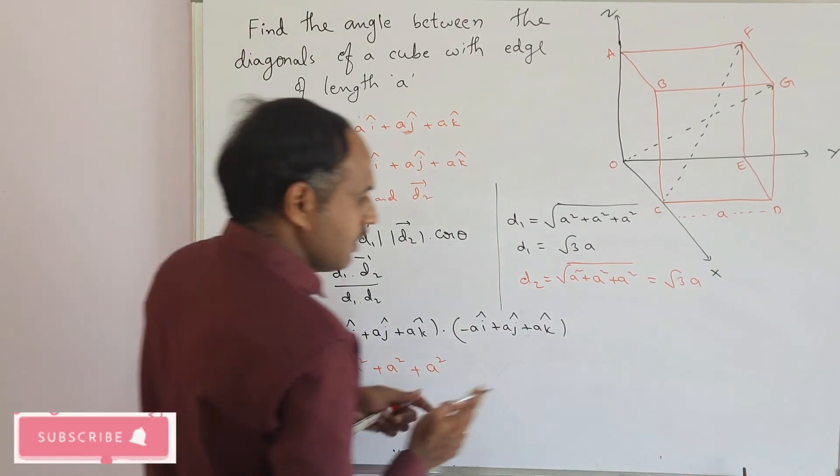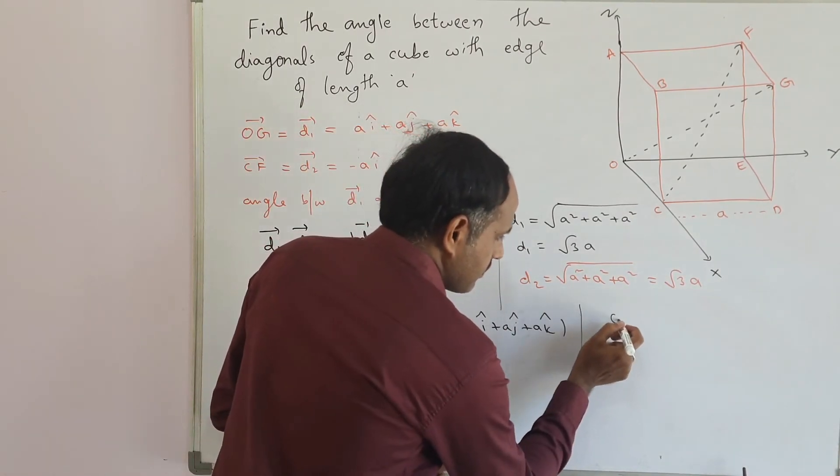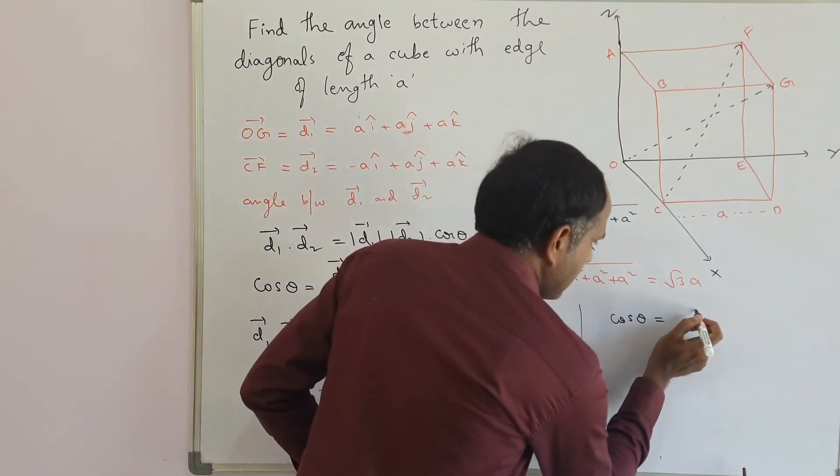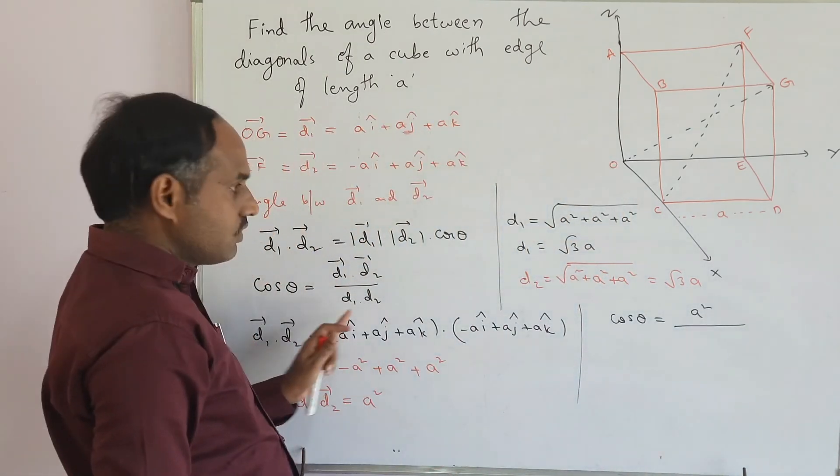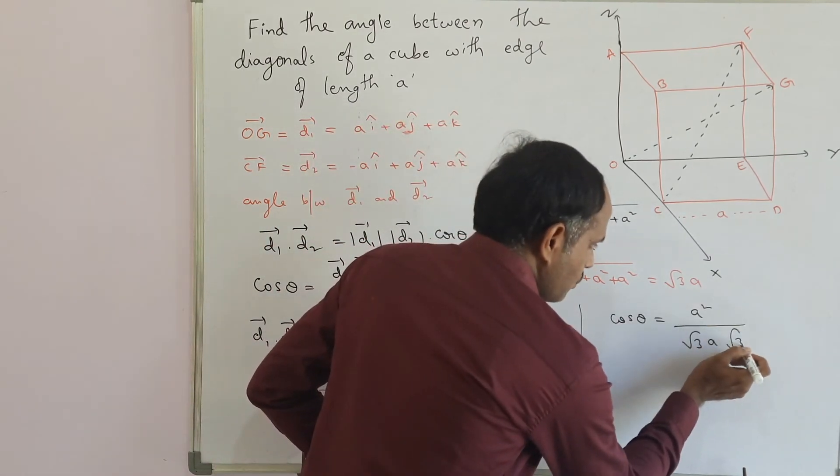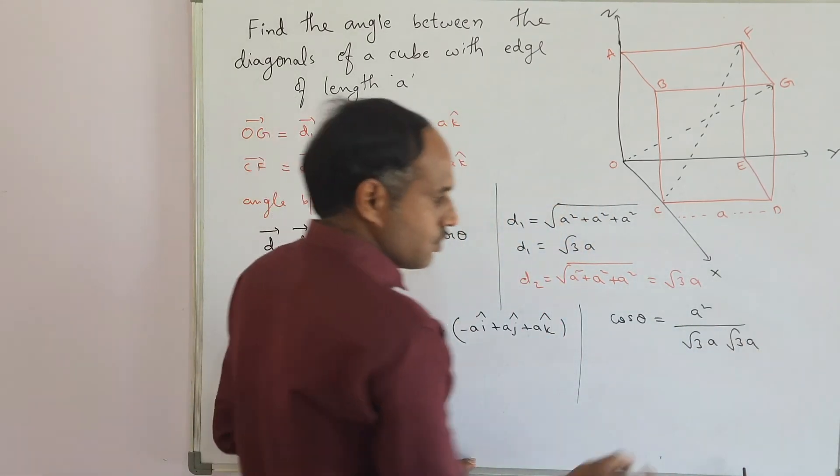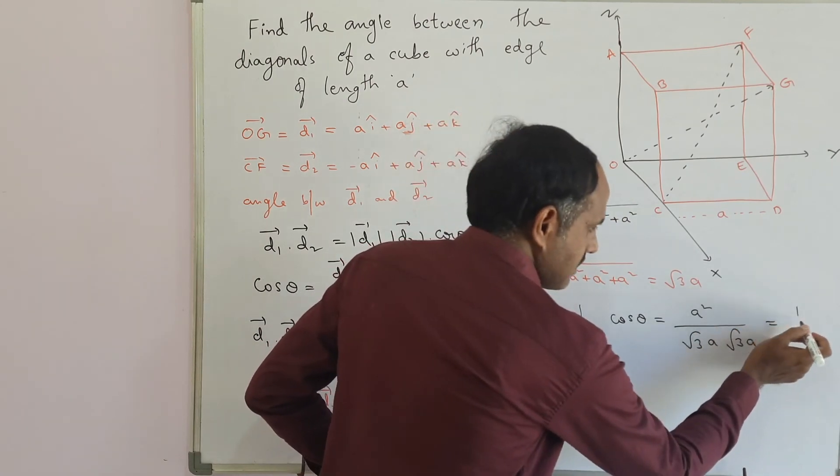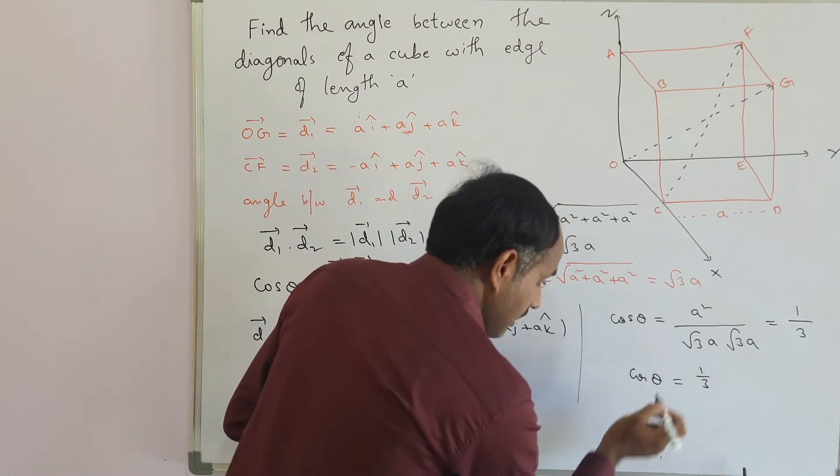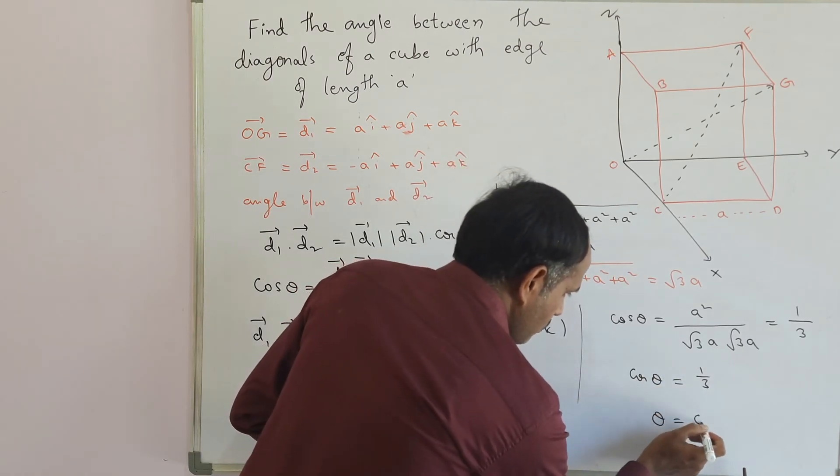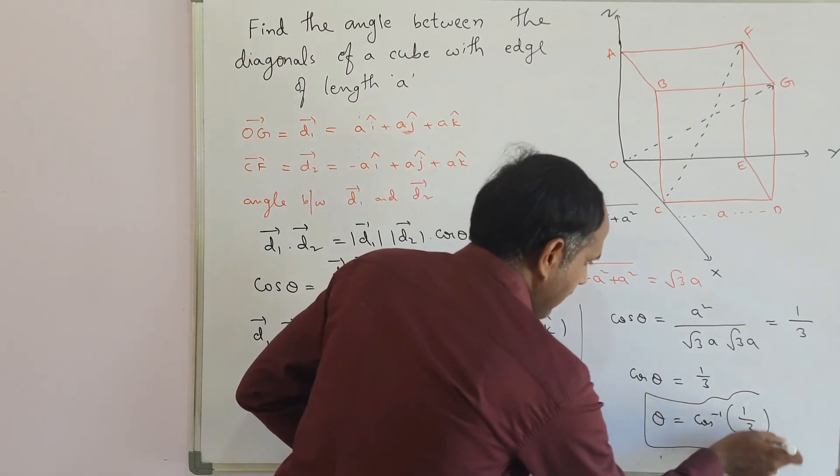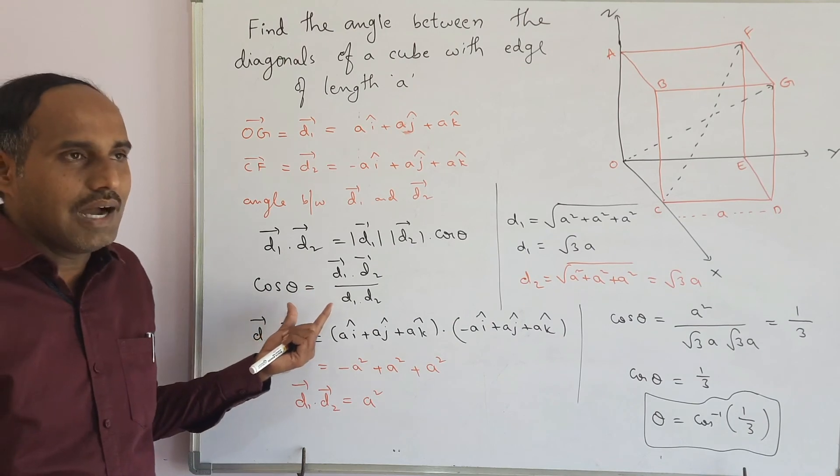Coming to finding the angle between them, cos theta equals D1 bar dot D2 bar, we got A square, upon magnitude of D1, we got root 3 times A, and magnitude of D2 is also root 3 times A. Here, we will get A square over 3A square, which is 1 by 3. When cos theta equals 1 by 3, then theta equals cos inverse of 1 by 3. This is the way we can find the angle between the diagonals by using dot product.